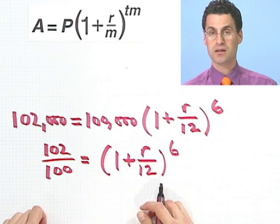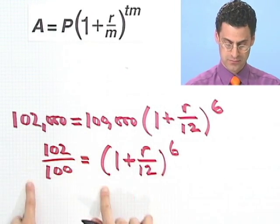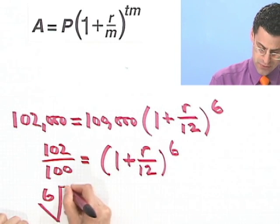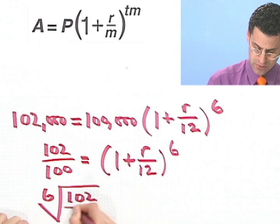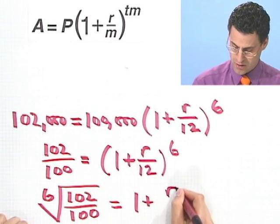If I take sixth roots of both sides here, then what I would see is the sixth root of 102 over 100. And that would equal 1 plus R over 12.